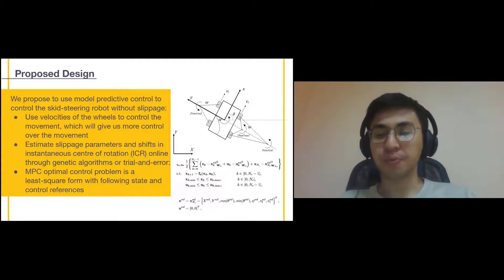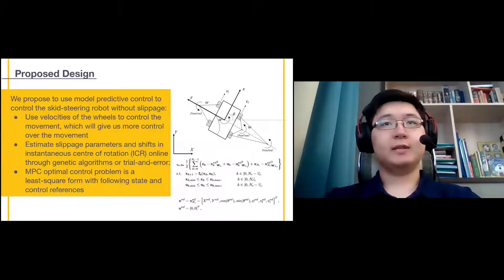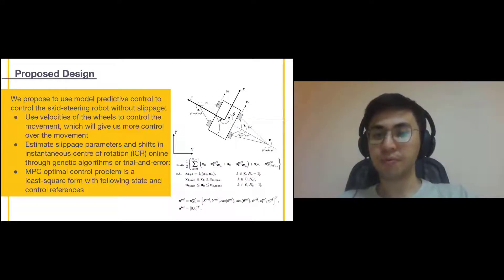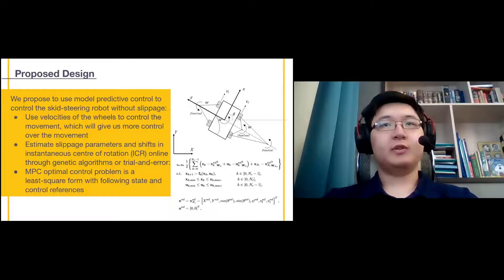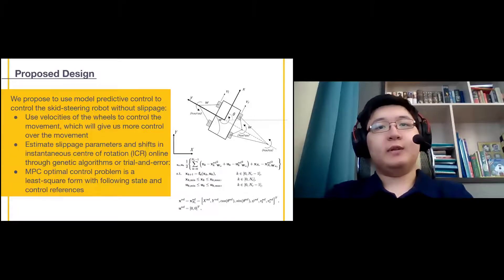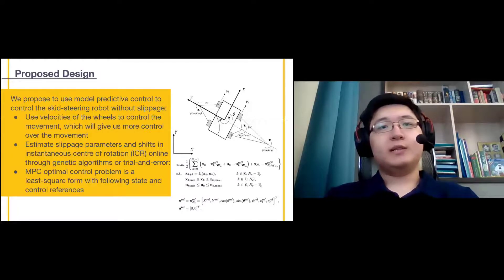To solve control-based problems, we propose to use MPC to control the skid-steering robot without slippage. Instead of using differential-drive approach, skid-steering kinematics is described using ICRs, positions of the robot velocities, and the left and right wheel velocities. We're going to use velocities of the wheel directly to control the movement. This will give us more control over the path and will assist us with avoiding the slippage. Slippage parameters and shifts in ICR are currently going to be found by trial and error, but could be done offline through genetic algorithms on a predefined terrain.